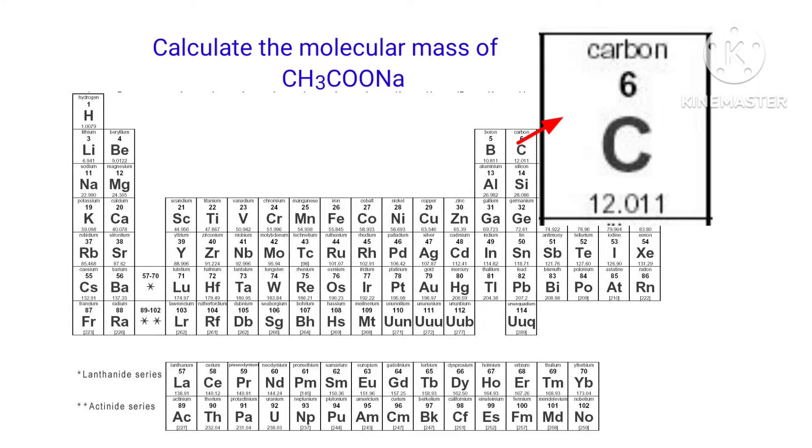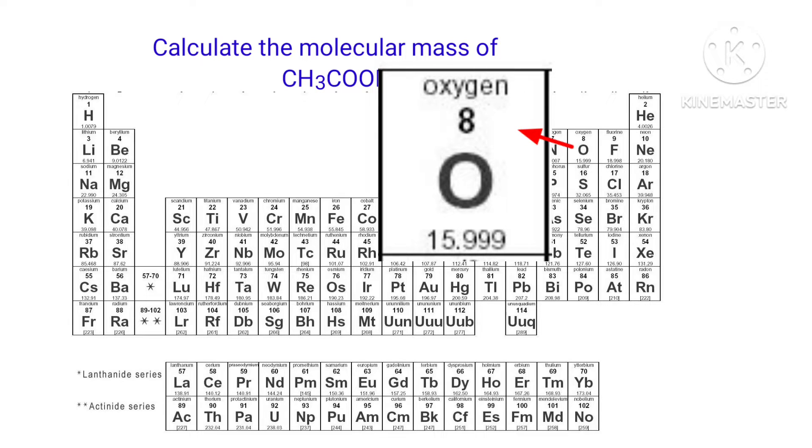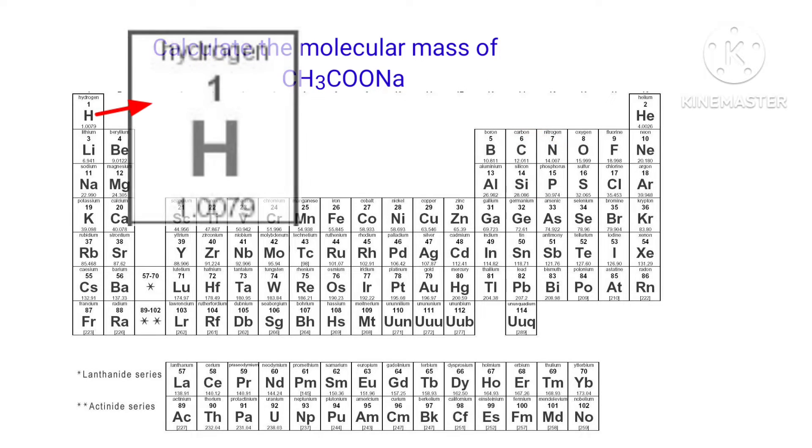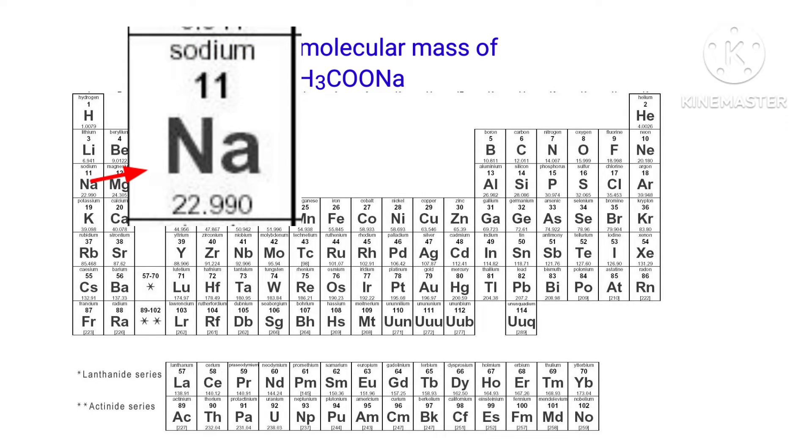The Atomic Mass of Carbon is 12.011. The Atomic Mass of Oxygen is 15.999. The Atomic Mass of Hydrogen is 1.0079. The Atomic Mass of Sodium is 22.990.